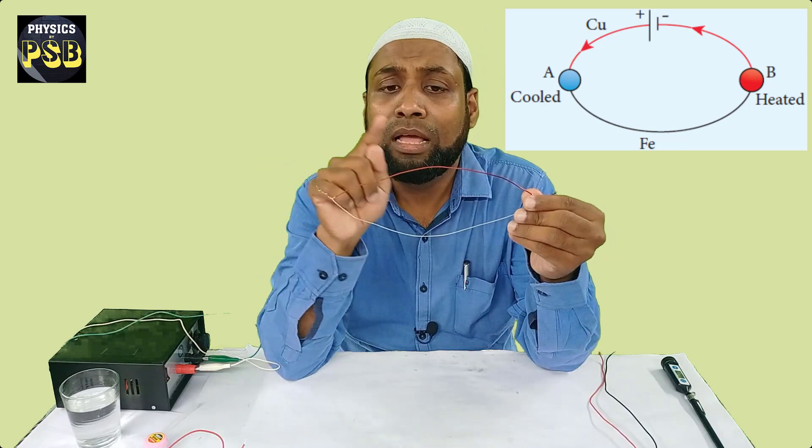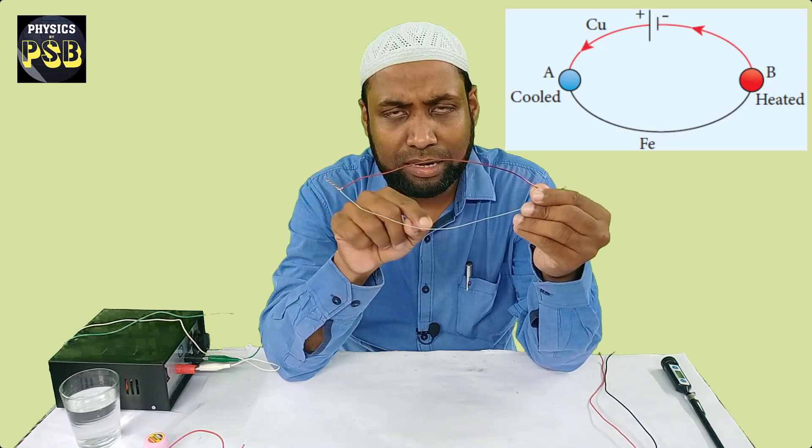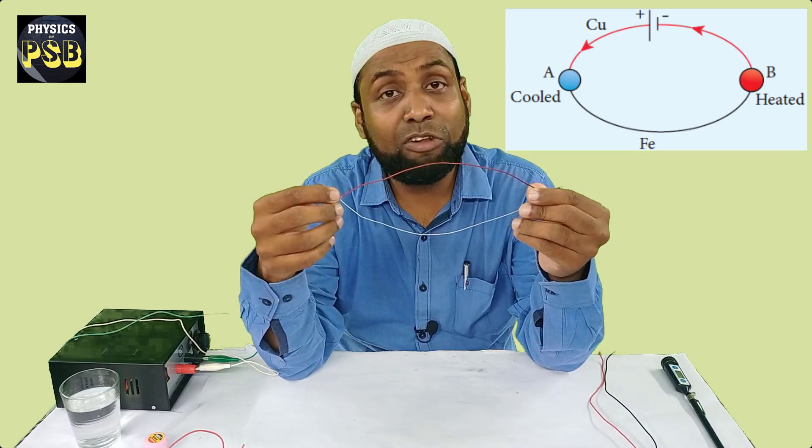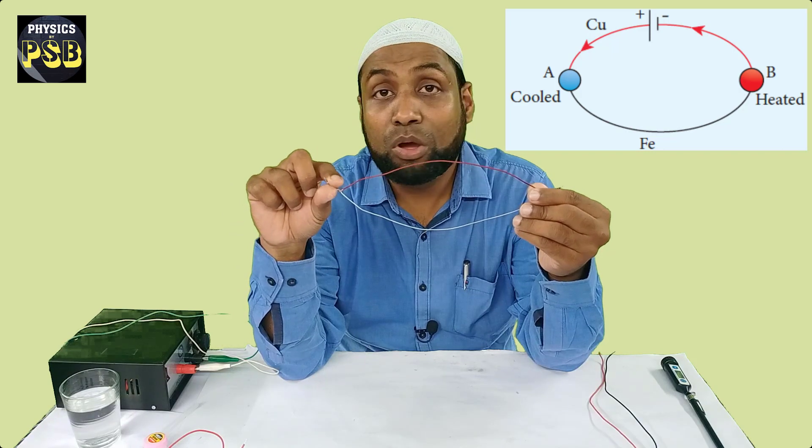For example, current flows from copper to iron. Then at this junction, heat will be absorbed. So it becomes cold.